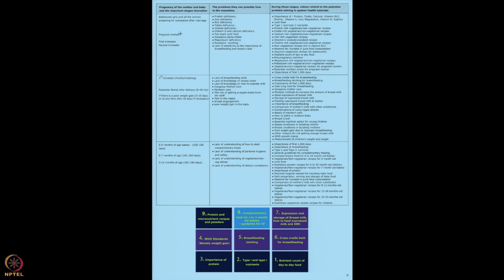For third trimester mothers, you also want to show charts and tutorials. A problem they can possibly face during this time is that they are iron deficient, B12 deficient, folate deficient — they have a lot of these deficiencies. We have basically listed all the tutorials that can be shown to mother and family so she can come out of this deficiency. All the tutorials on nutrition — protein, folate, calcium, B12, choline, vitamin C, iron, magnesium, vitamin D — all that.